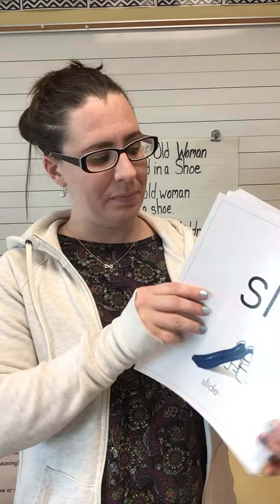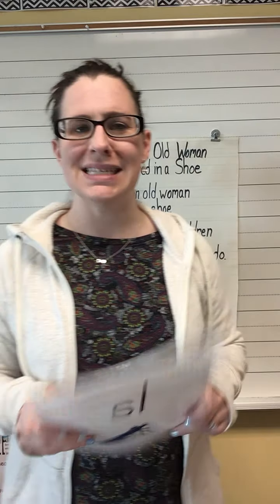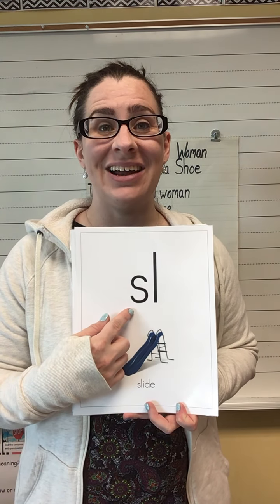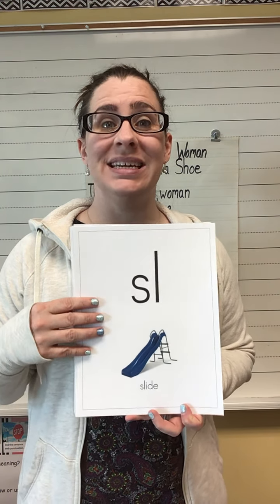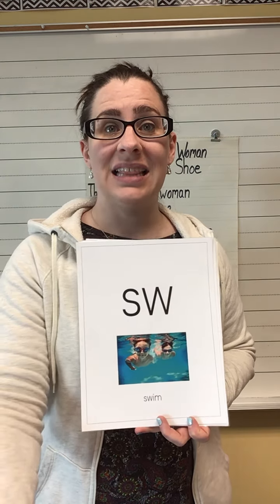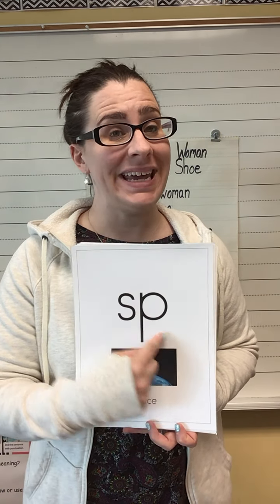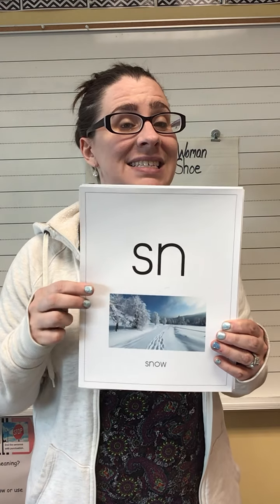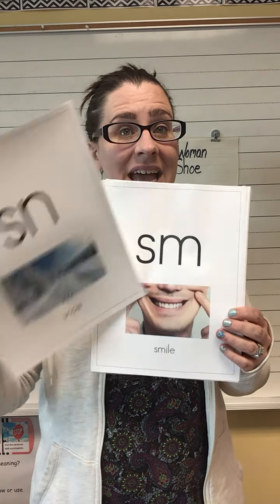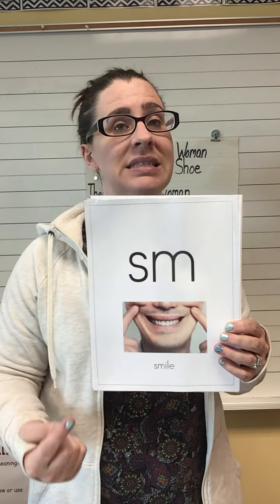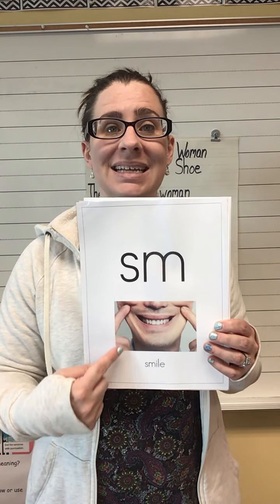Let's do our s-blends. Letters are s, l — sound is /sl/. Letters are s, w — sound is /sw/, like in swim. Letters are s, p — sound is /sp/. Letters are s, t — sound is /st/. Letters are s, n — sound is /sn/. Letters are s, m — sound is /sm/, like in smile.